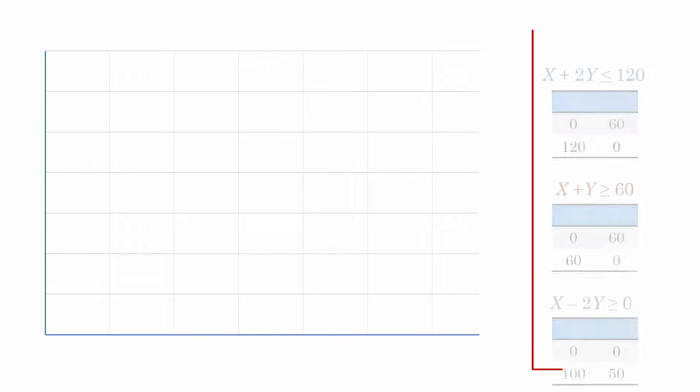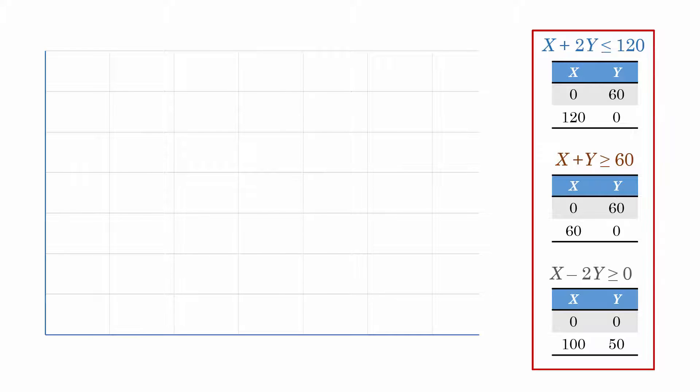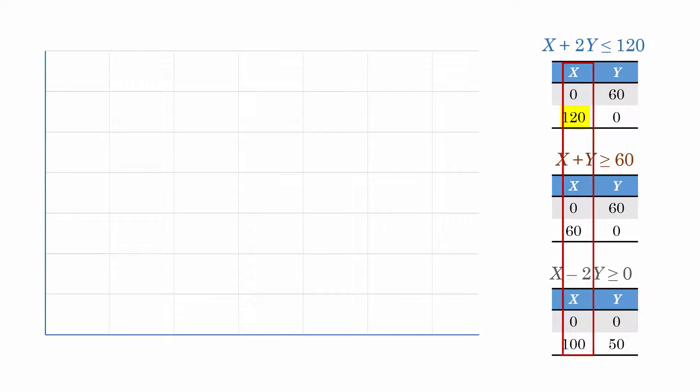Let's now draw the graph. Here are the constraints along with the x, y coordinate pairs obtained earlier. Since the highest x value we have here is 120, and the highest y is 60, we can go up to 120 on the x axis, and up to 60 on the y axis.